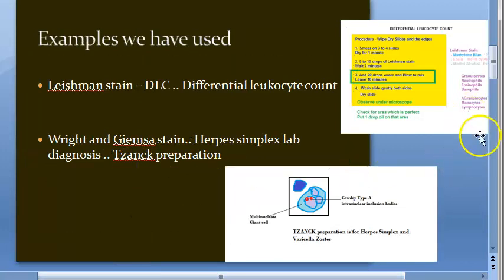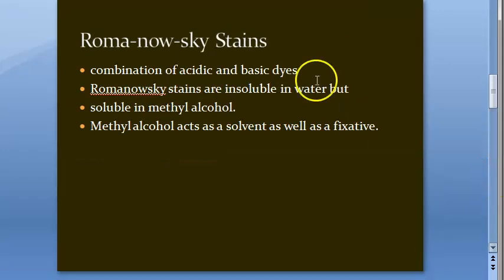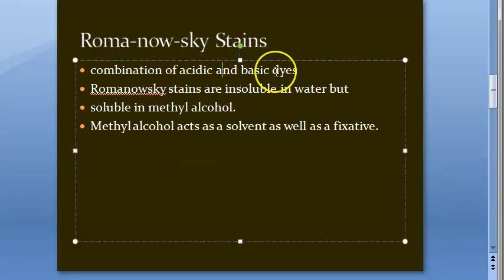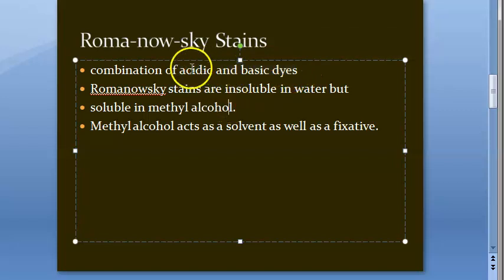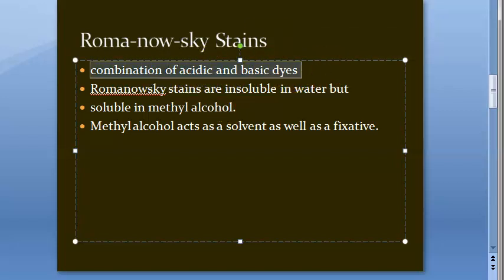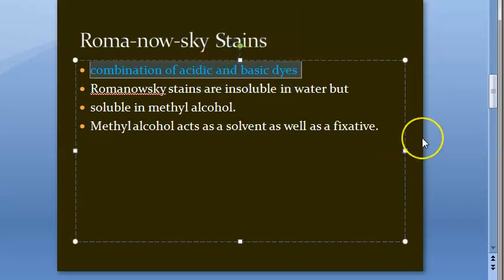So all these are Romanowski stains. Now, what exactly are Romanowski stains? They are a combination of acidic and basic dyes. When you get Lishman stain in the lab, it will have both the acidic and basic components inside it.